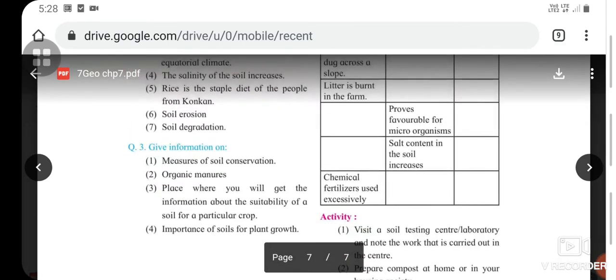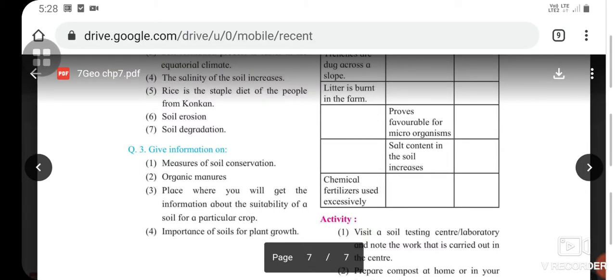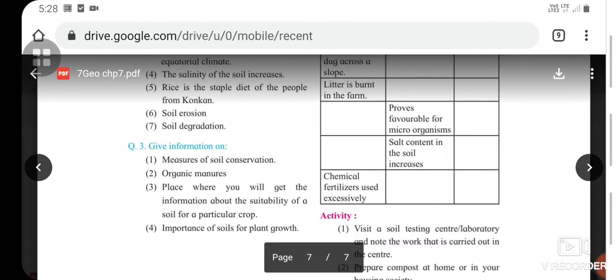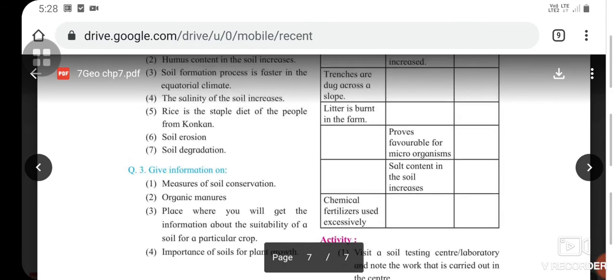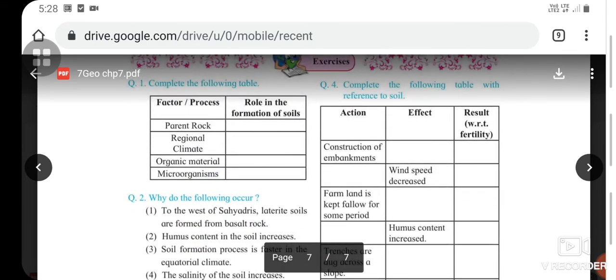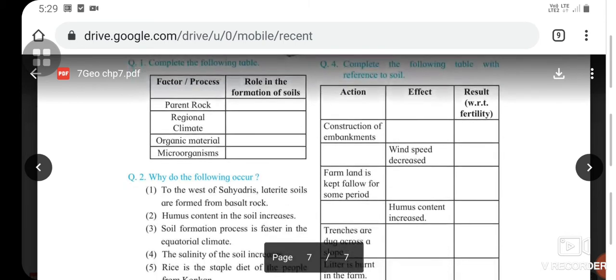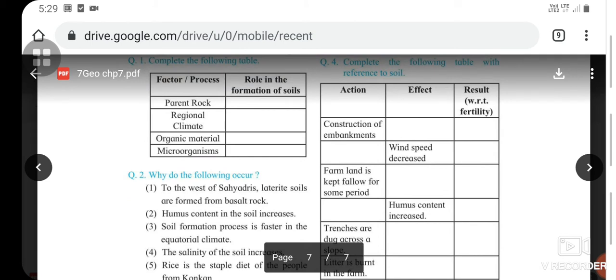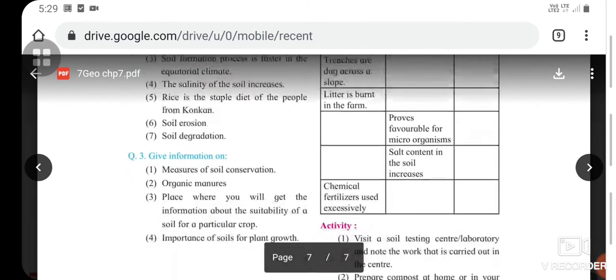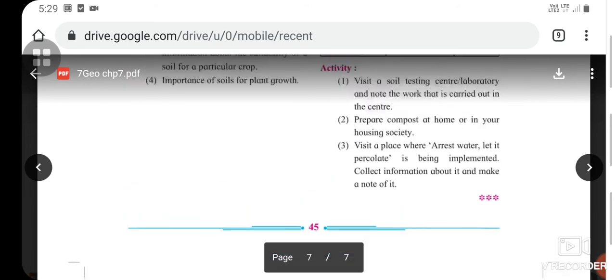Third, give information about measures of soil conservation, organic manures, places where you will get information about suitability of a soil for particular crops, and importance of soil for plant growth. The fourth is about completing a table. You are given action or effect or result and complete the rest. For example, first is about the action which is construction of embankments. Now you have to write the effect and result for it. Another is wind speed decreased - you have to write the cause for this, which will be your action and the result. And so on. You can complete this table.